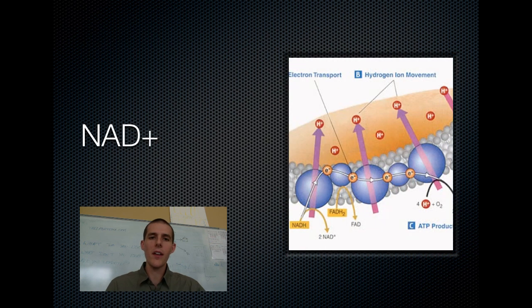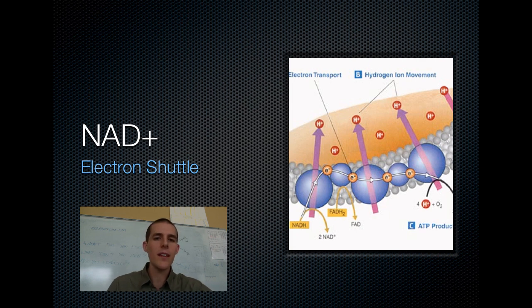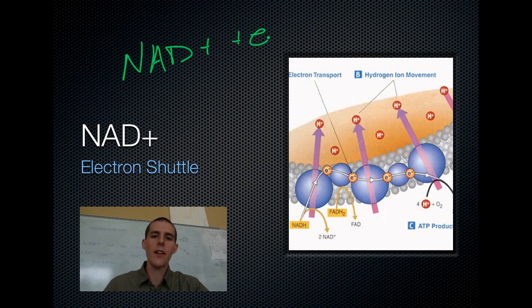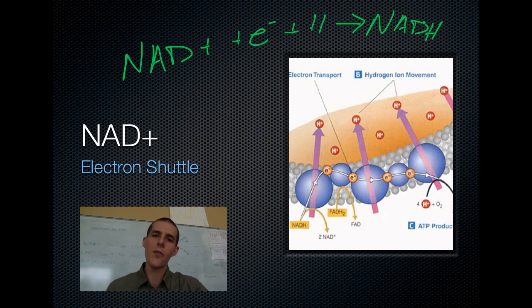Let's wrap up by talking about NAD+, which is going to be a big deal when we talk about the electron transport chain. Just think of him like this: he is a taxi cab for high energy electrons. In the process of oxidizing glucose down to carbon dioxide and water, high energy electrons were being given off. Every time one of those high energy electrons was given off, NAD+ picked up an electron and also picked up a hydrogen, giving us NADH. This NADH carries that high energy electron, taxi-cab style, over to the electron transport chain where it will be used to do work — but that's a whole other video.